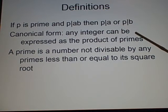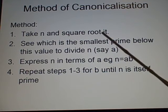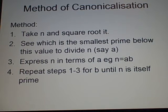Now the canonical form, this is what we're going to be doing today. Any integer can be expressed as a product of primes. We've got an example for that, and I'll show you the method now. You take a number and you square root it. This is the number that you want to find its canonicalization. I don't know if that's a word or not.